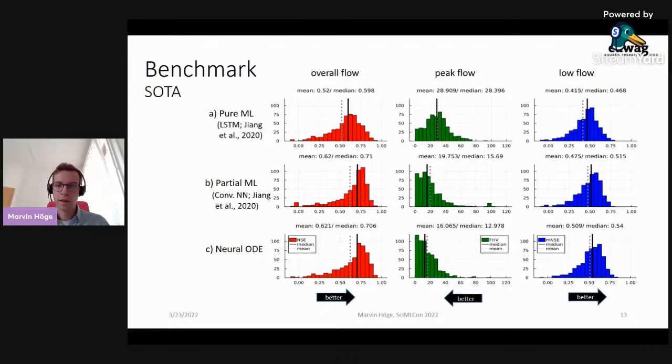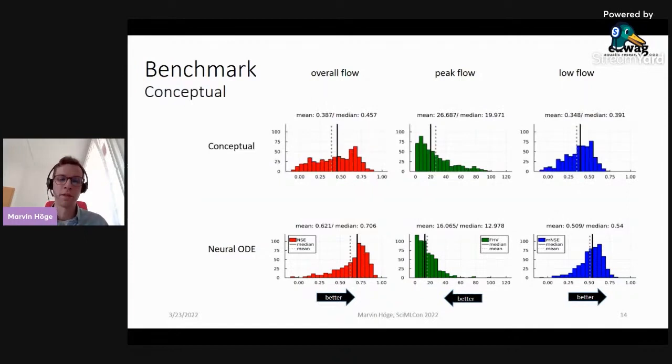None of these models are very close to the optimum values of the respective metrics, but this is very common in hydrology since observations are often subject to large uncertainty. So for example, Nash-Sutcliffe efficiency values above 0.6 are already considered good. This improvement of the neural ODE approach is even more significant when compared to the original plain conceptual model, where you can easily see that the neural ODE model outperforms it in every aspect.